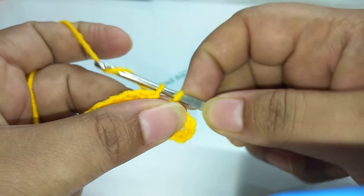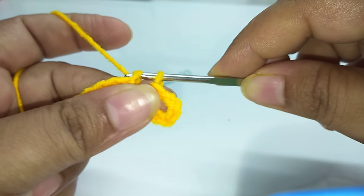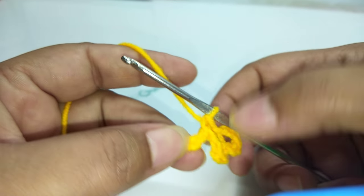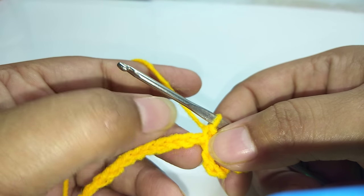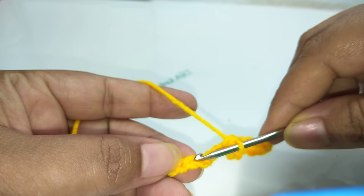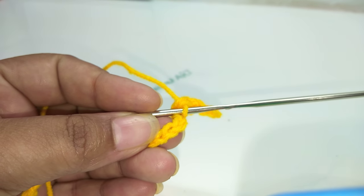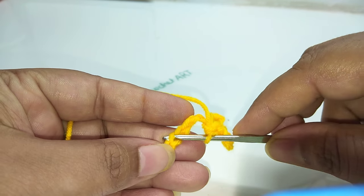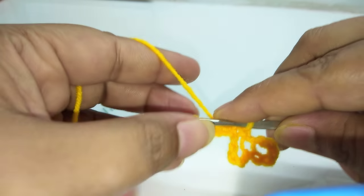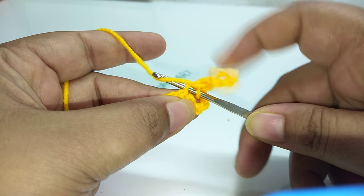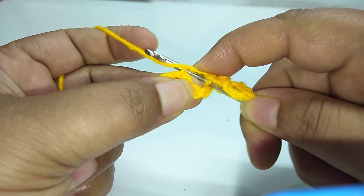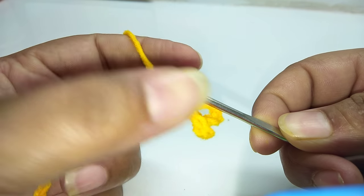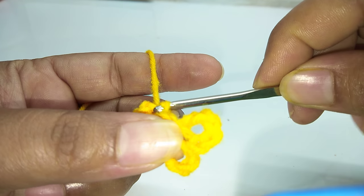Out of these two, yarn over and simply transfer from this to this. Again skip next four: one, two, three, four, and in the fifth one insert your hook like this. And again we'll work slip stitch, so yarn over and slowly. First we transferred from the first hole, now we'll transfer from the second hole like this.